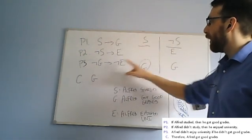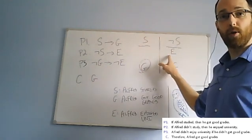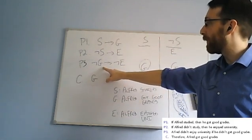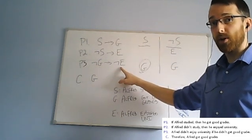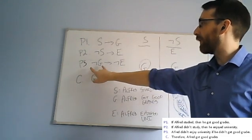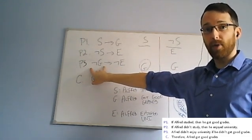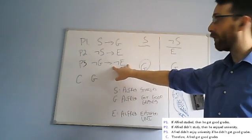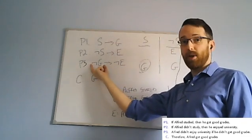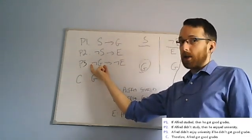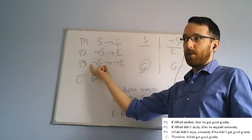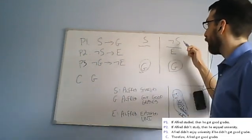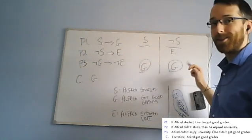But now, if I compare this subconclusion, this intermediate step I've got, knowing that he enjoyed university in this case, and I look at premise three, premise three tells me if he didn't get good grades, then he didn't enjoy university. That's enough for me to know the antecedent of this conditional must be false, because if it were true, it must be that Alfred didn't enjoy university. But I know he did enjoy university. So this can't be true. Not G can't be true. If not G can't be true, that's another way of saying G can't be false. In other words, it must be true.